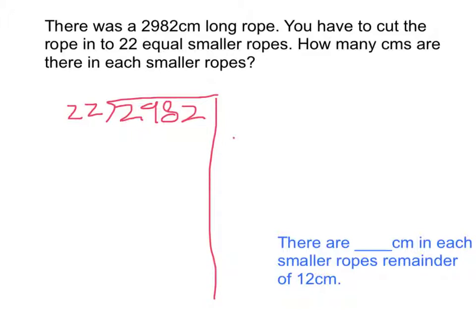So first, I'm going to use 100. Then we'll get 2200. Then the leftover becomes 782.